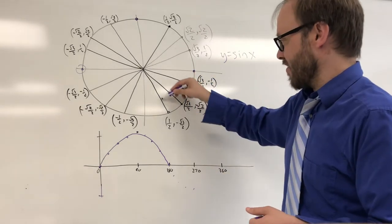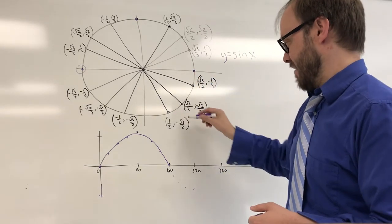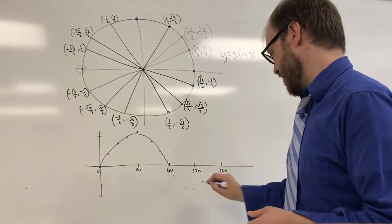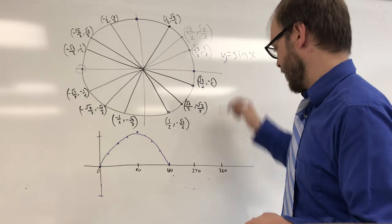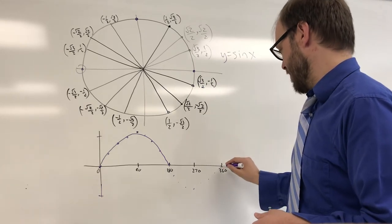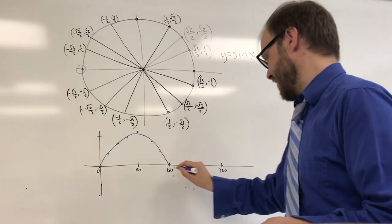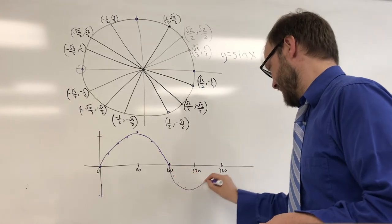And then the y-coordinates start to become closer to 0 again. We get back to negative radical 3 over 2, and negative radical 2 over 2, and a y-coordinate of negative one-half. And then we're back to a y-coordinate of 0 here, and you can see that we've completed that curve.